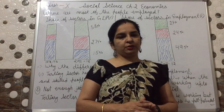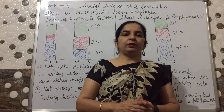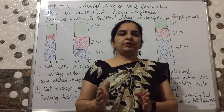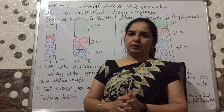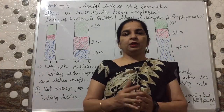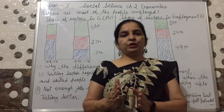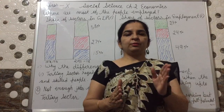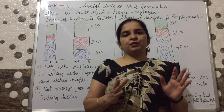In the last lecture, we discussed about their share in GDP. We know very well that up to 1972 to 1973, the primary sector's contribution was more. And slowly the contribution of the tertiary sector increased, and in 2011-12, the share of the tertiary sector exceeded that of the primary sector in GDP.